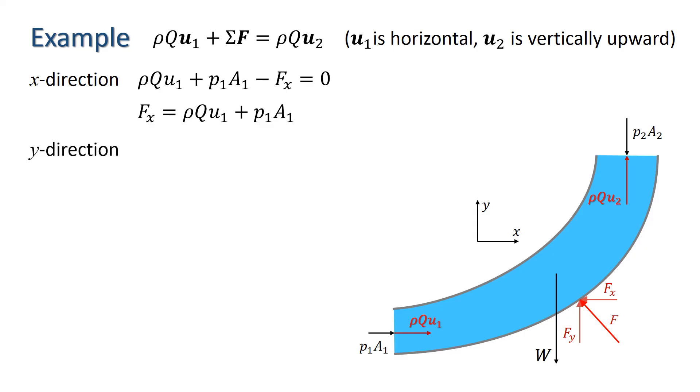In the y direction, we have 0 minus W plus Fy minus P2 A2 equals rho Q U2. In this case, the incoming momentum has no vertical component, which is why the first term is 0. Rearranging to find Fy, we have the equation shown here.